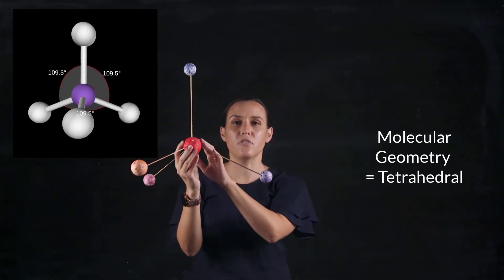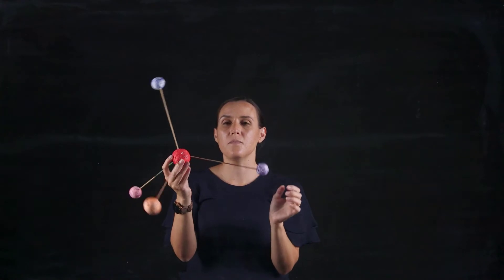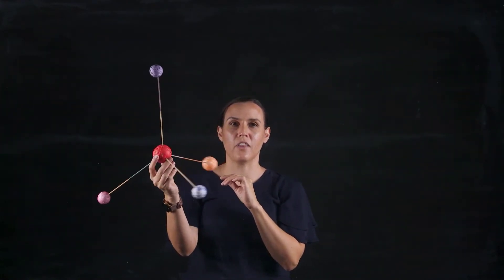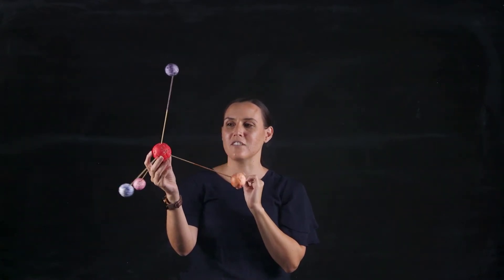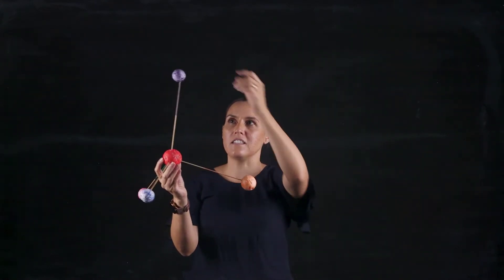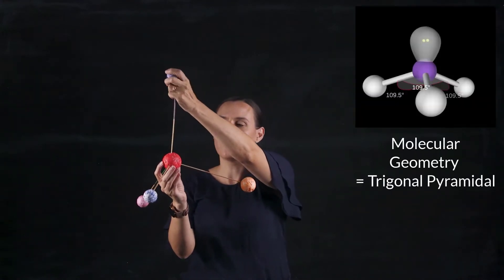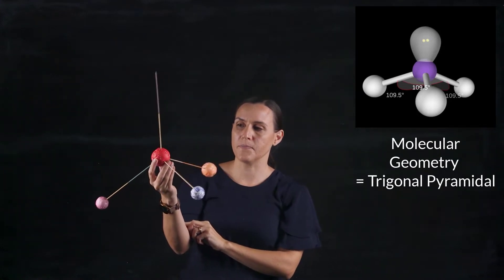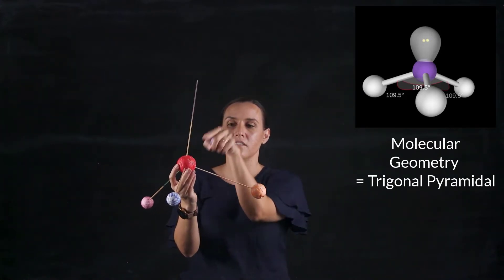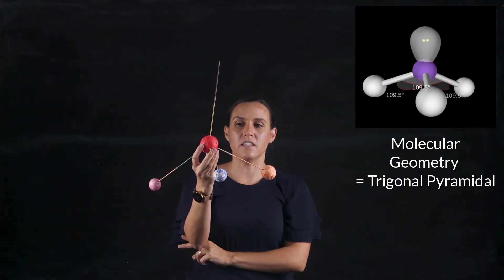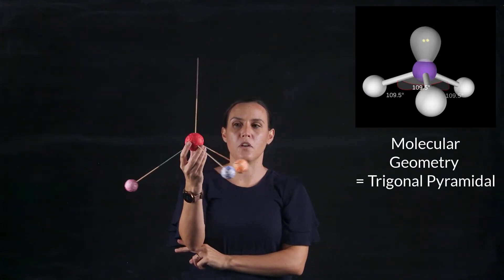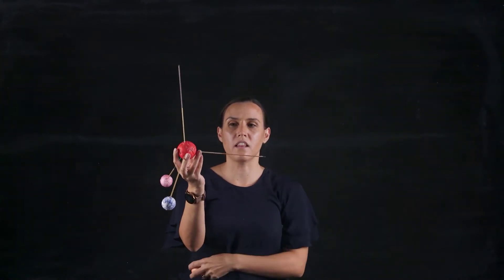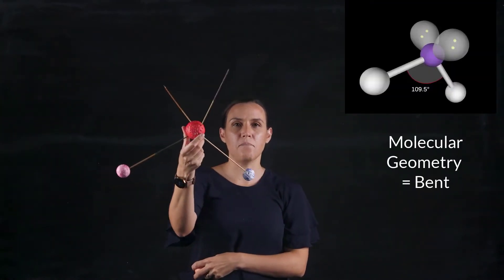Now if I was to replace one of these atoms with a lone pair — it doesn't matter which one I choose — it should be 109 degrees for each of those angles. So that's my lone pair and these are my bonding atoms, giving us the trigonal pyramidal shape. And if I take another atom off and put another lone pair in, I'm back to that bent conformation.